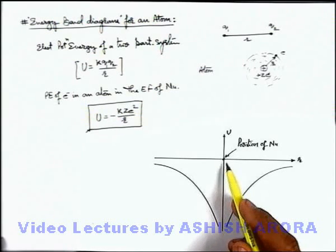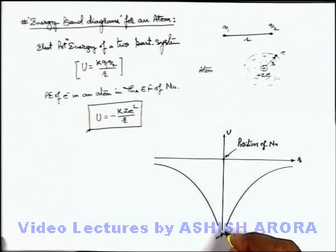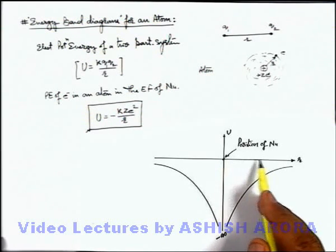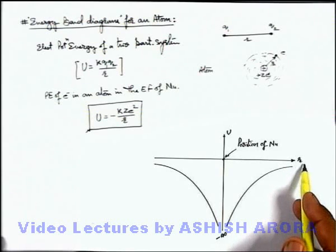And we can see when the distance of electron from nucleus is negligible, potential energy is about approaching to minus infinity. And when electron is far away from nucleus on its surface it will tend to zero.